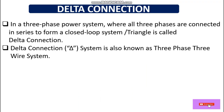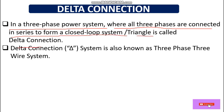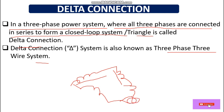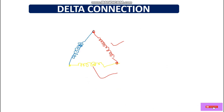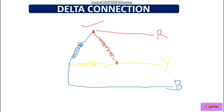Now come to delta connection. In a three-phase power system, a delta connection is where all three phases are connected in series to form a closed loop or triangle — this is also called a three-phase three-wire system. One coil connects in series with the next, forming a triangular closed loop, with R, Y, B supply connected at the three corners.